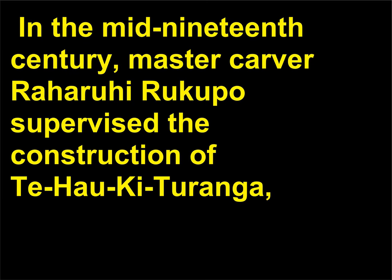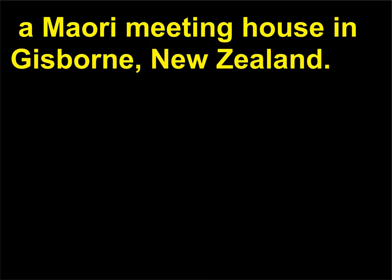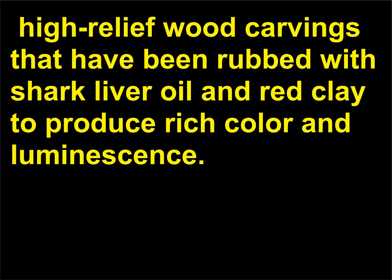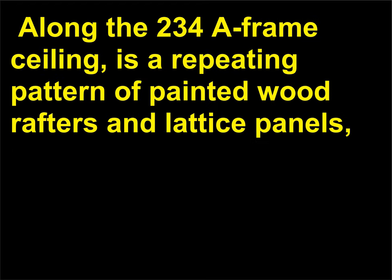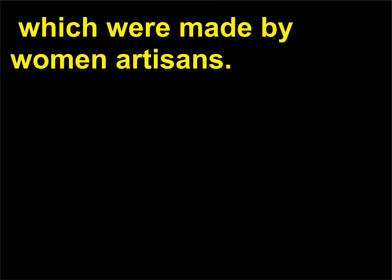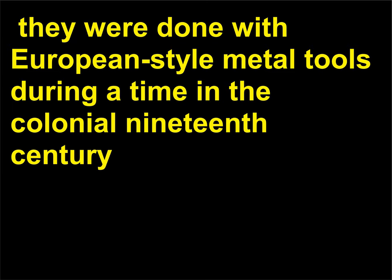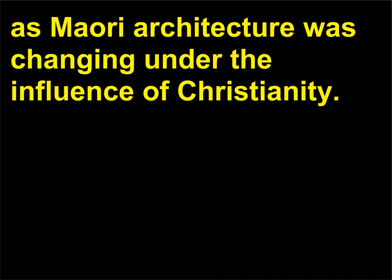In the mid-19th century, master carver Raharuhi Rukupo supervised the construction of Te Hau-ki-Turanga — a Maori meeting house in Gisborne, New Zealand. The house, a type known as a wharenui, is covered in detailed high-relief wood carvings that have been rubbed with shark liver oil and red clay to produce rich color and luminescence. Along the A-frame ceiling is a repeating pattern of painted wood rafters and lattice panels, which were made by women artisans. Though the nature of the carvings is traditional, they were done with European-style metal tools during a time in the colonial 19th century, as Maori architecture was changing under the influence of Christianity.